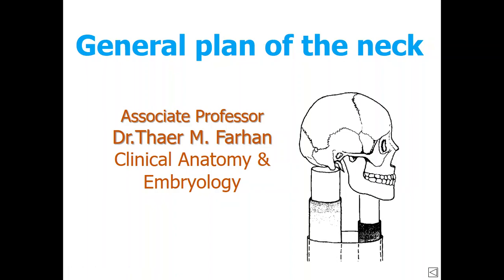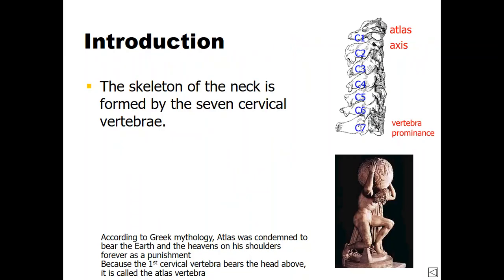Today is the first in a series of lectures about the regional anatomy of the neck. We should start with some introductory information about the region. The framework or skeleton of the region is composed of cervical vertebrae, a series of vertebrae from C1 to C7. The first vertebra is called the atlas, the second is called the axis, and the last one is called the vertebral prominence due to the prominent spinous process, which is palpable when we pass our hands over the lower part of the neck.